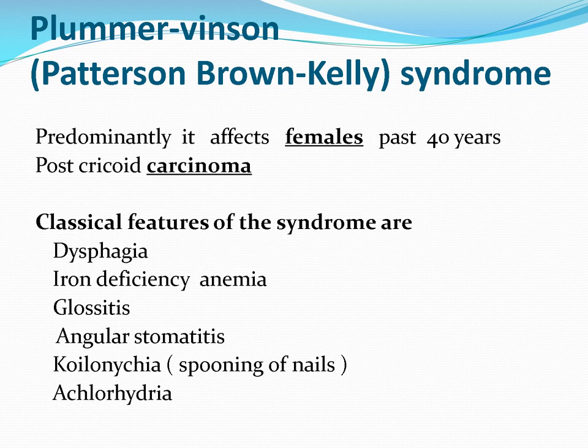Clinical features include the triad of dysphagia, iron deficiency anemia, and glossitis. This condition causes inflammation of the whole GIT tract and later fibrosis, most commonly at the upper end of the esophagus at the level of the cricopharyngeus. Signs include koilonychia, achlorhydria, and dysphagia — all signs and symptoms of iron deficiency anemia.